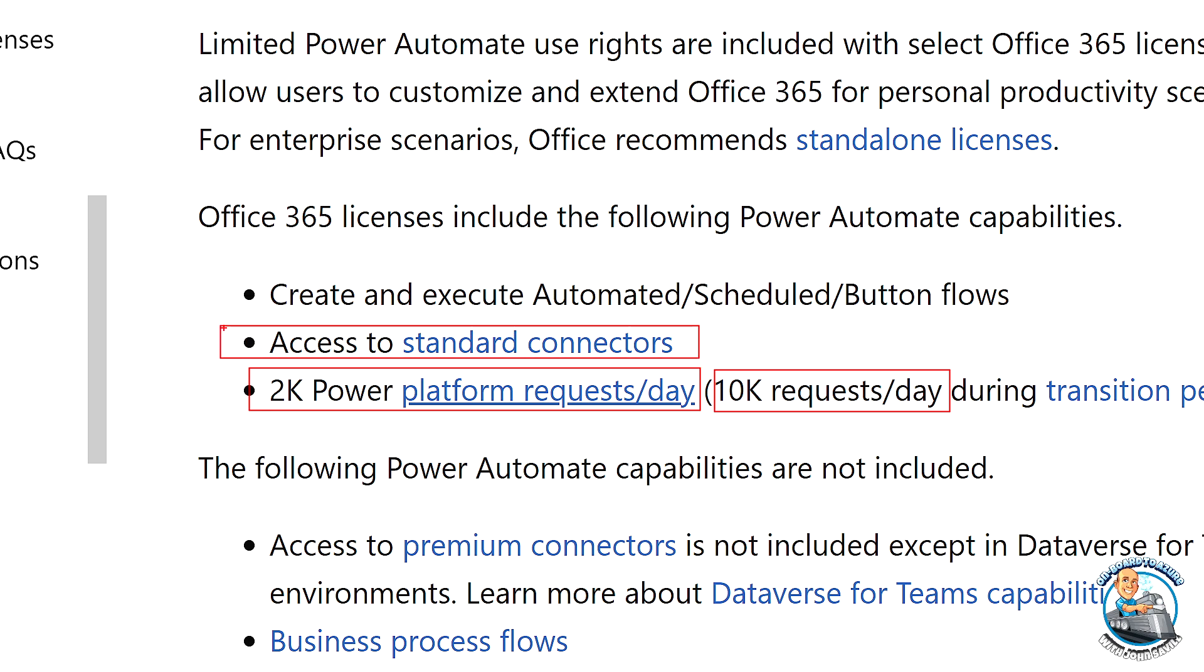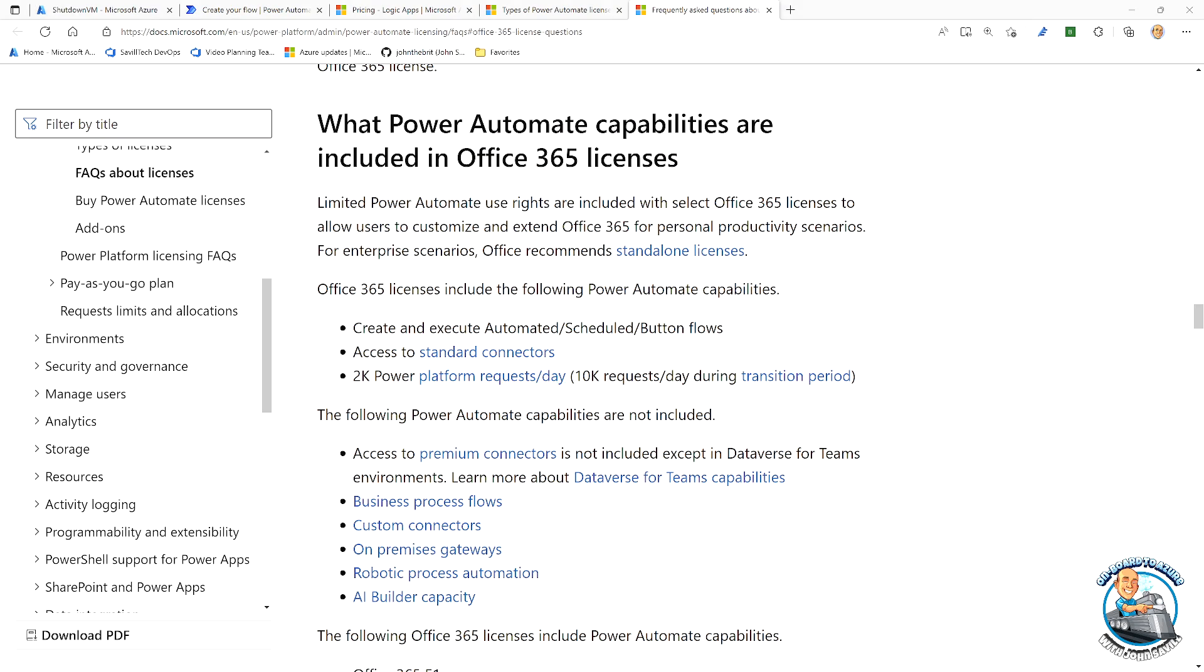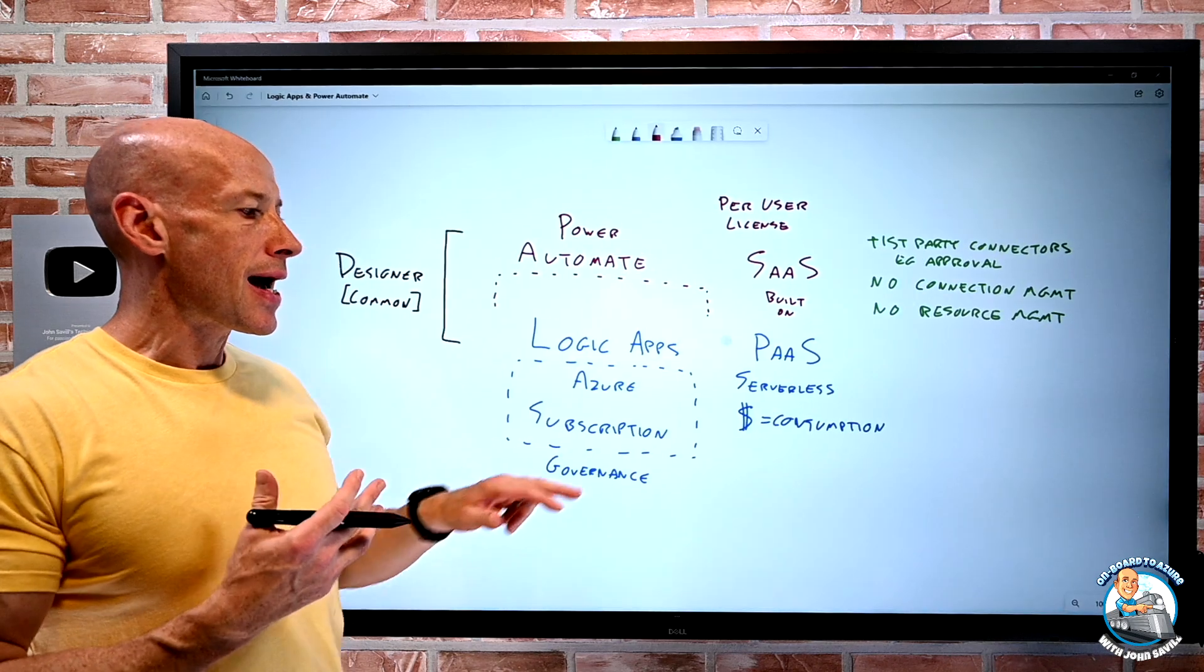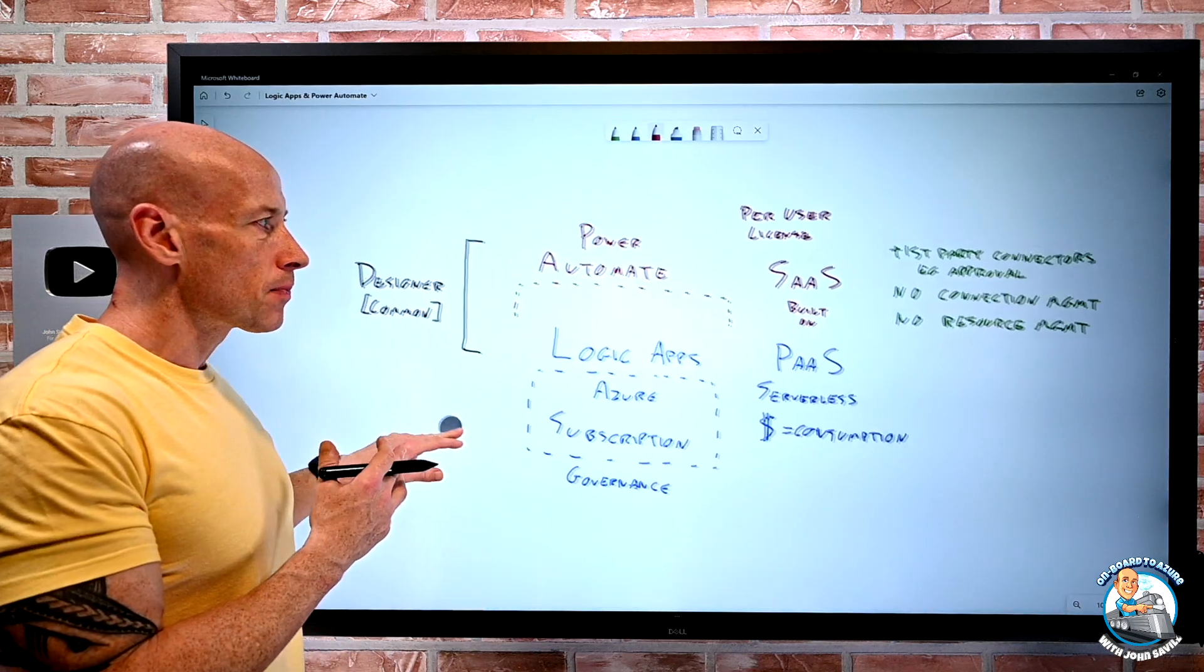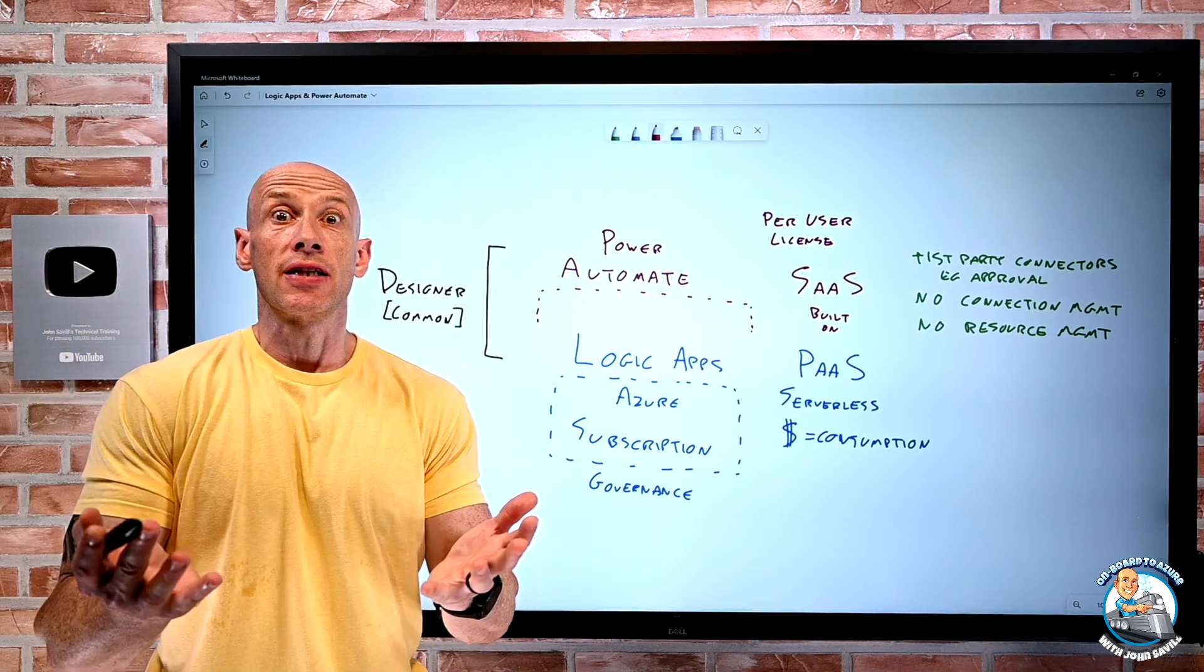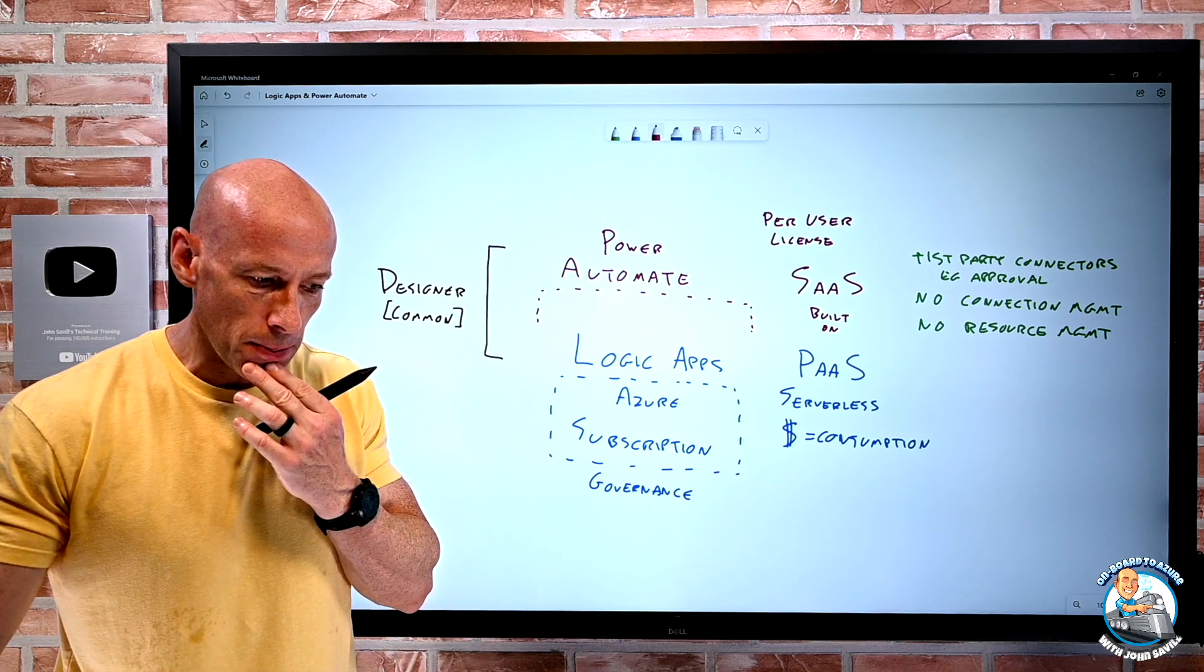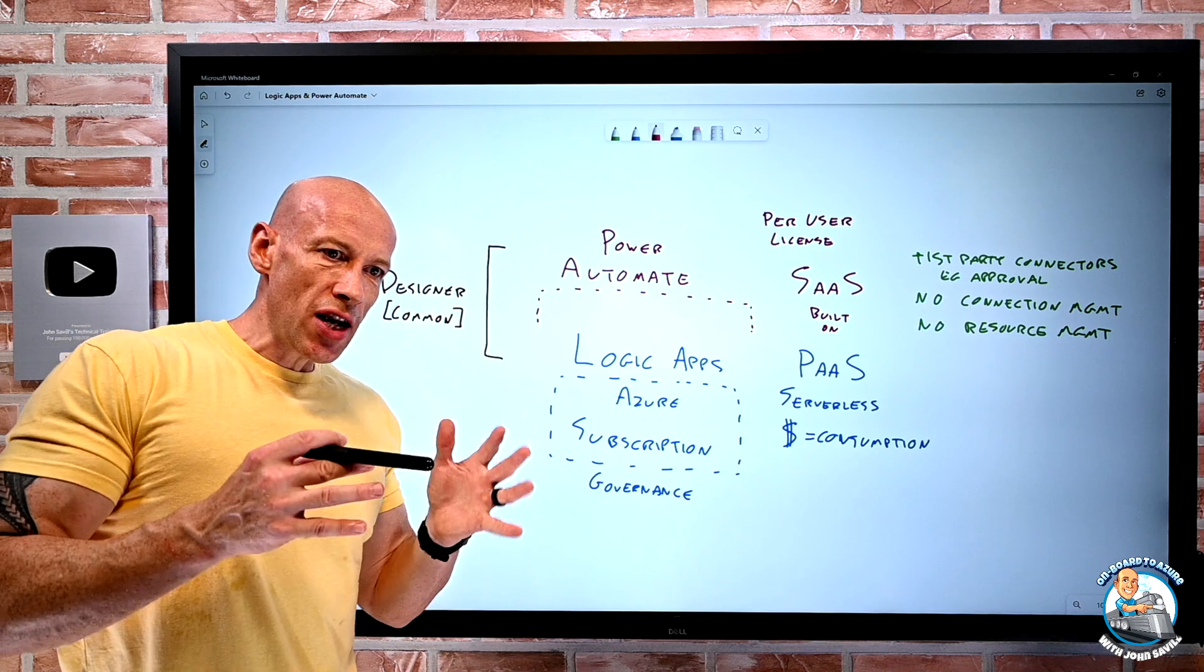Well, what can I do? Well, here you can see, we're currently going through a transition period, but normally it would be 2,000 Power Platform requests a day. But it's 10,000 during this transition period. And I get access to all the standard connectors. I can create and execute automated scheduled button flows and things like that as well. So we have those various capabilities available to us. But for most of us, we're going to get access to Power Automate because, hey, I have a Microsoft 365 license, or I have a Dynamics license. I'm going to have one of those.